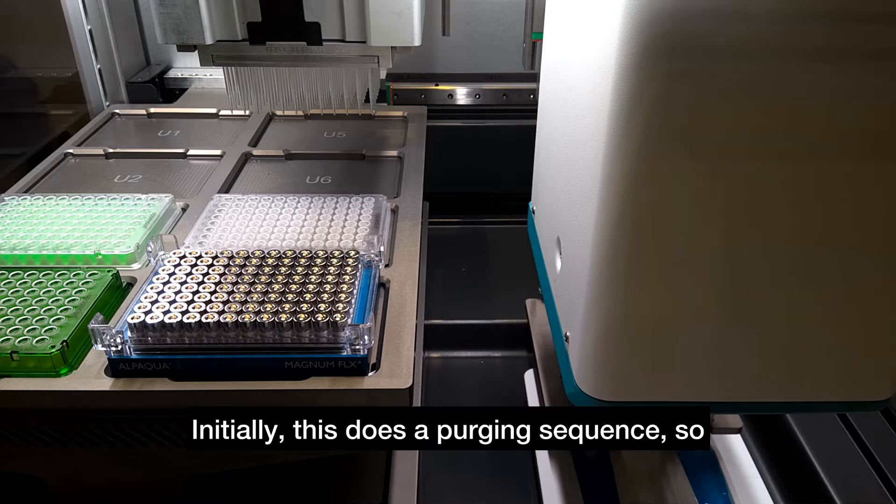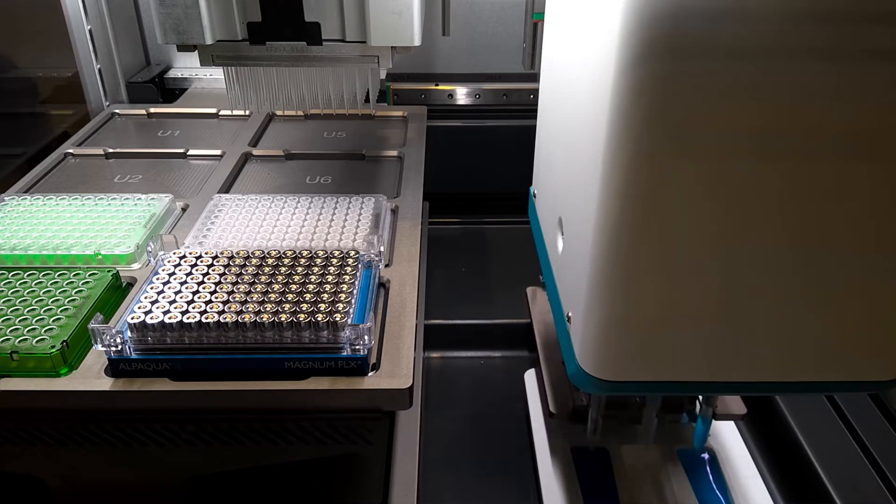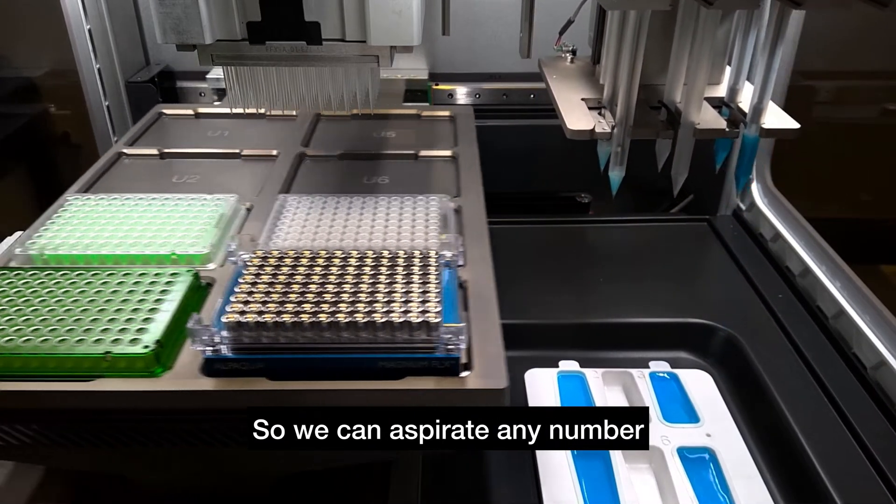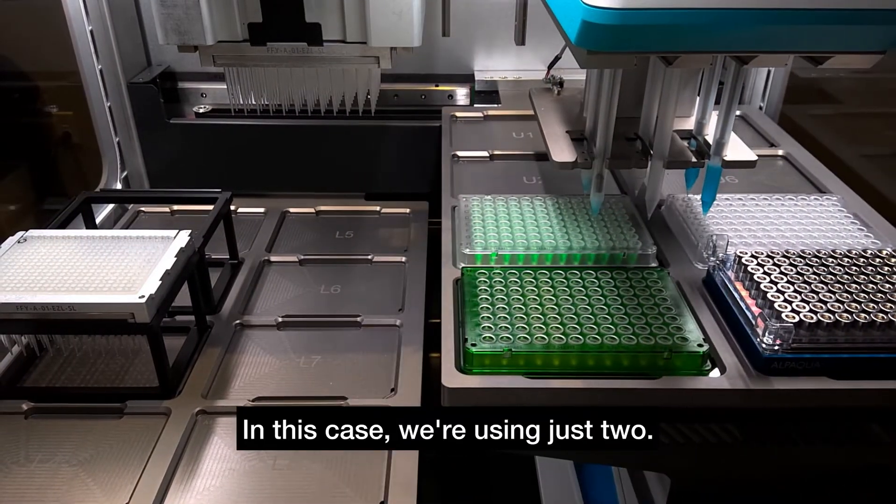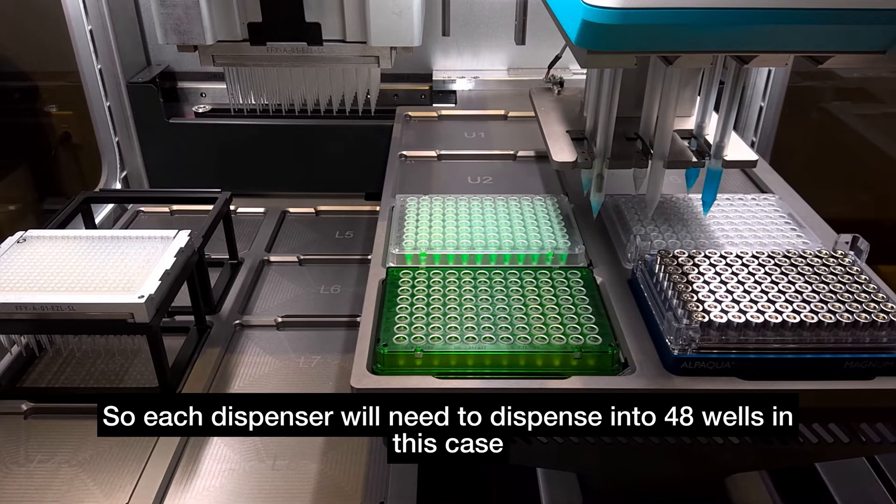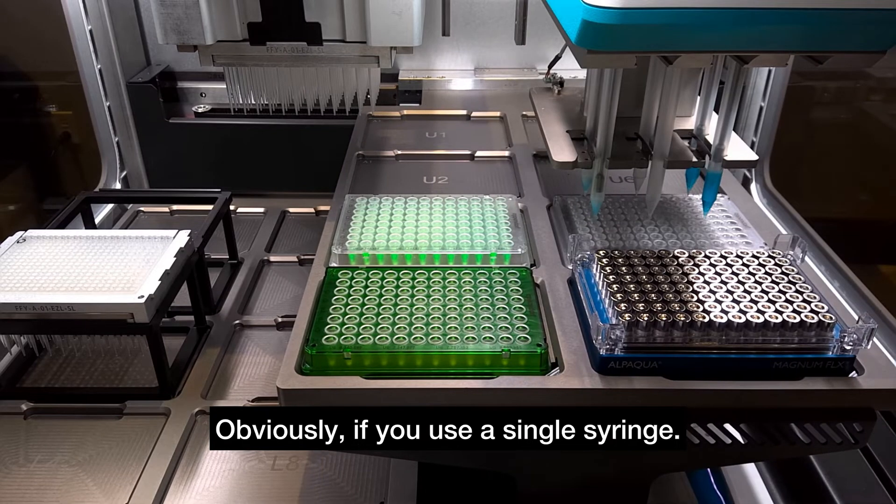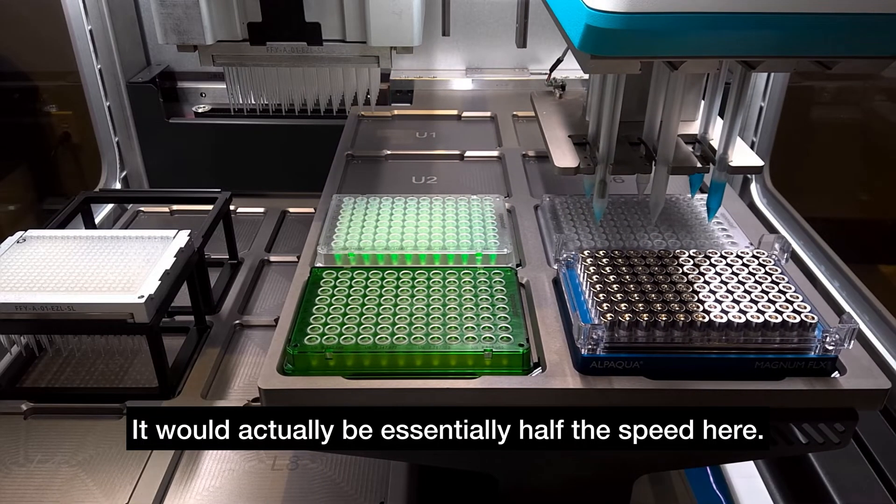Initially, this does a purging sequence, so it just ensures that there are no air bubbles in the dispense heads. And in this case, it's actually aspirated in two syringes. So we can aspirate in any number of syringes in this system. In this case, we're using just two, and it's working its way across the plate. So each dispenser will need to dispense into 48 wells in this case. Obviously, if you use a single syringe, it would actually be essentially half the speed here.